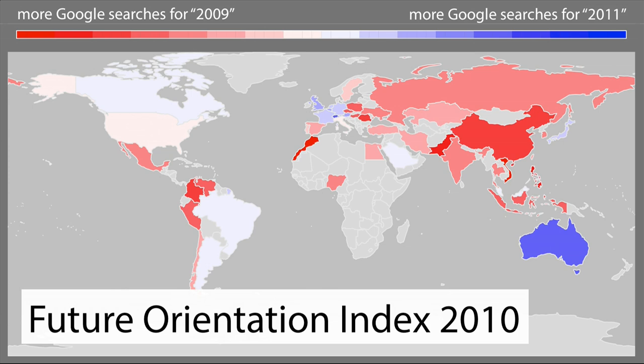And if you look at this map, you might see a bit of a pattern. A number of the countries who are colored blue, like Australia, Germany, and the UK, for example, are relatively rich. Whereas a number of the countries who are colored red, such as China and India, for example, are relatively poor.